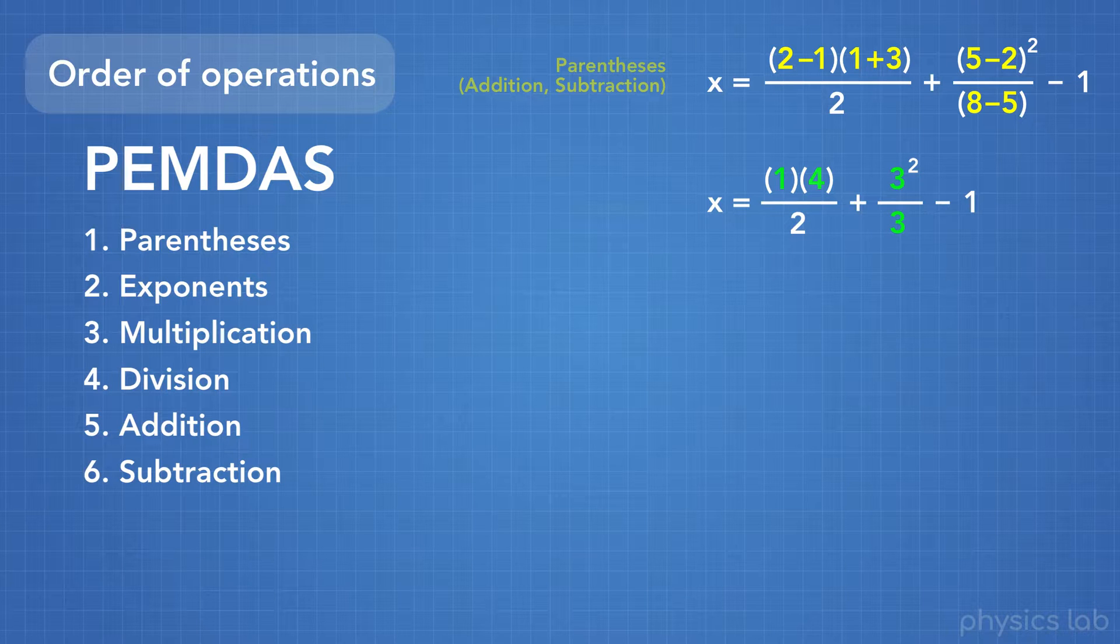Next up is any number with an exponent. Here, now we have 3 squared, 3 with an exponent of 2. So we calculate 3 squared, which is 3 times 3, and we get 9.